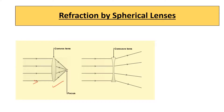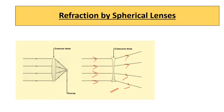As you can see from this diagram, the incident light rays are converged at a point which is called the focus — that is why a convex lens is known as a converging lens. For a concave lens, the incident light rays are diverging after refraction, which is why a concave lens is known as a diverging lens.